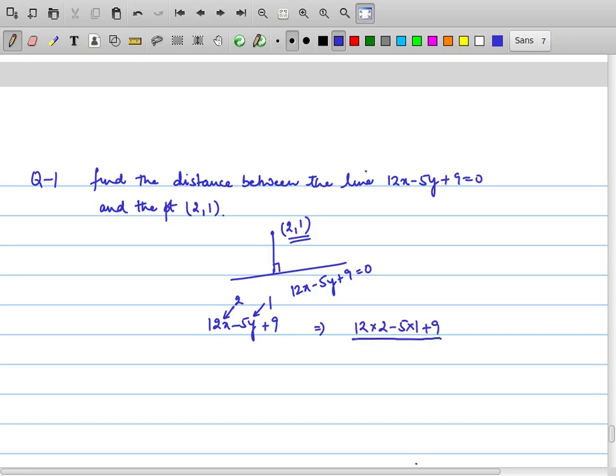Step 3: divide by coefficient of x square, that is 12 square plus coefficient of y square, and take square root and take modulus to get positive answer because distance is always measured positive. Therefore 24 minus 5 plus 9 upon this comes out to be 13. This is 33 minus 5, 33 minus 5 is 28 by 13. That is the distance of this point from the line is 28 by 13 units.